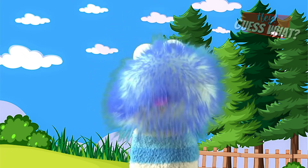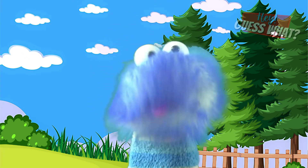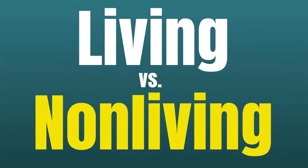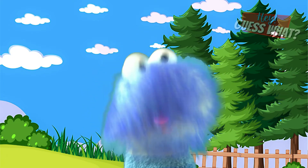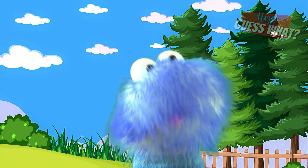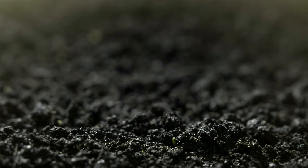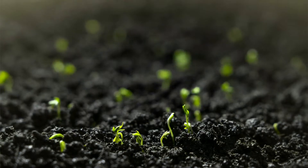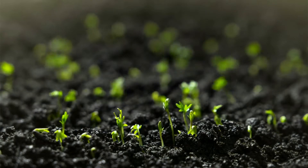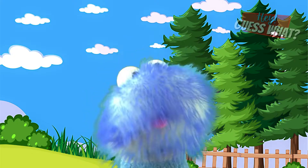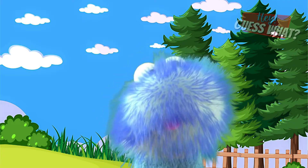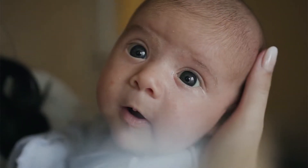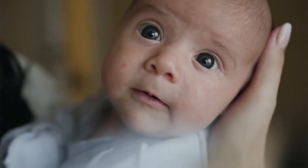Today we're going to learn about the differences between living things and non-living things. Living things, like plants and animals, start small and get bigger over time. They go through different stages as they grow — just like how you started as a baby and now you're getting older.